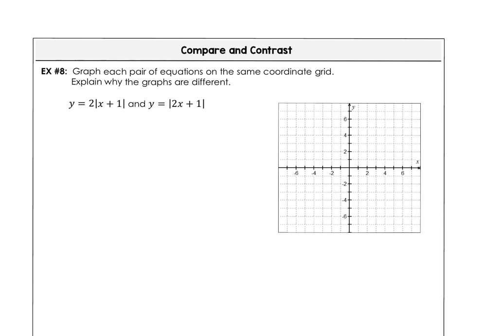In our final example, we want to graph each pair of equations on the same coordinate grid and explain why the graphs are different. Our blue graph, 2 times the absolute value of x plus 1, displays a stretch factor of 2 because a is 2, and the vertex is at negative 1, 0.